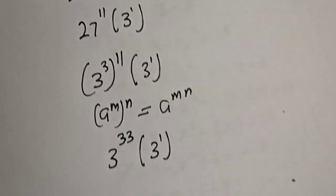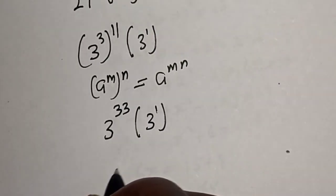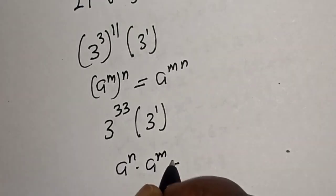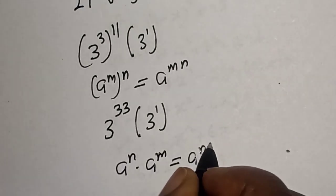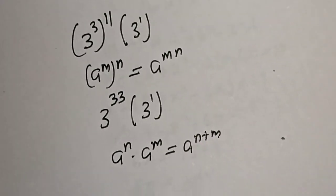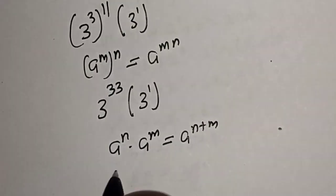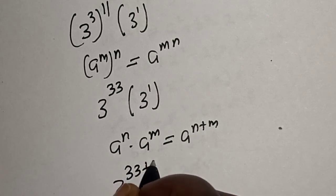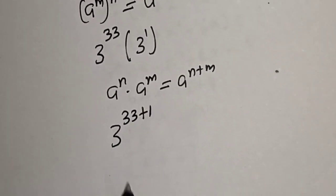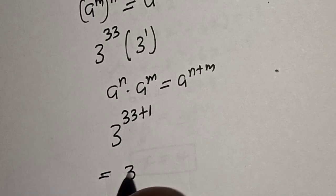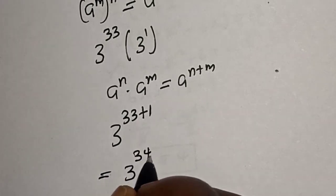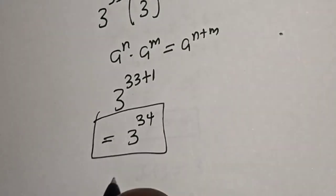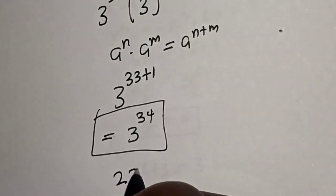Also take note of this rule: if you have a raised to power n multiplied by a raised to power m, you add the exponents. So 3 raised to power 33 multiplied by 3 raised to power 1 equals 3 raised to power 34. Therefore, 27 raised to power 11 plus 27 raised to power 11 plus 27 raised to power 11 equals 3 raised to power 34.